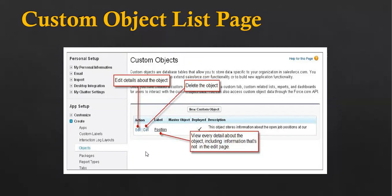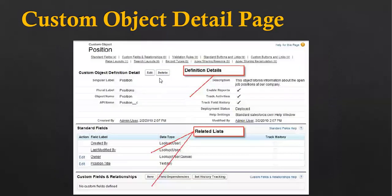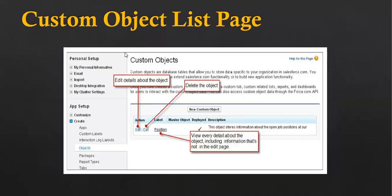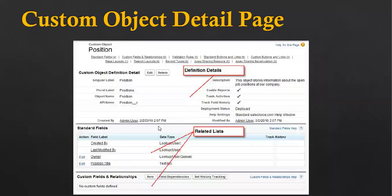This video contains only theoretical information. If you follow the upcoming videos in this playlist, you will see how to create objects and fields in Salesforce. This is the detail page of an object in Salesforce Classic — clicking on a position opens this page, where you can see various object details along with standard and custom field information.